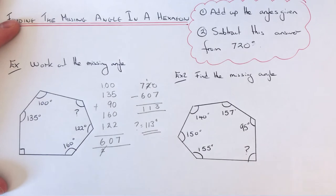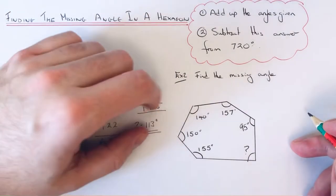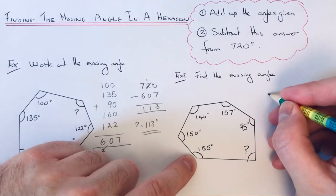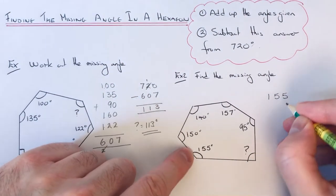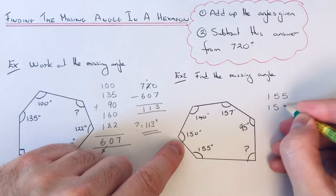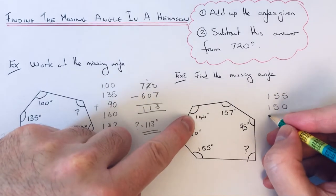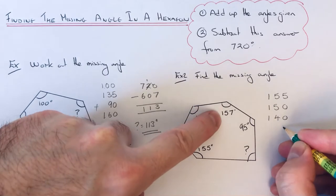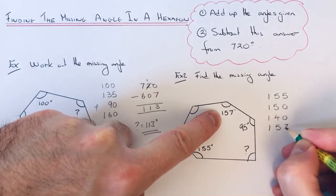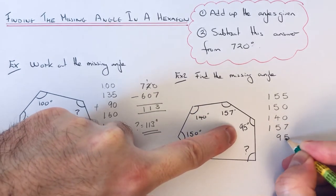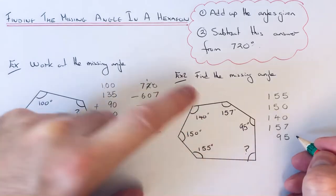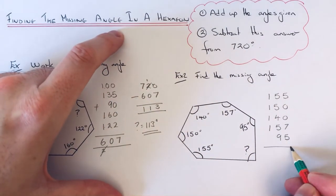Let's move on to the second example. Again we have an irregular hexagon, so again we just need to add up the angles. It doesn't matter which order you do it in. It's just nice to go around the hexagon so you don't miss any of the angles out.